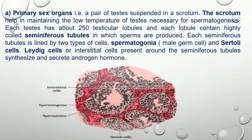Each seminiferous tubule is lined by two types of cells: spermatogonia and Sertoli cells. Leydig cells, or interstitial cells, are present around the seminiferous tubules and synthesize and secrete androgen hormones.